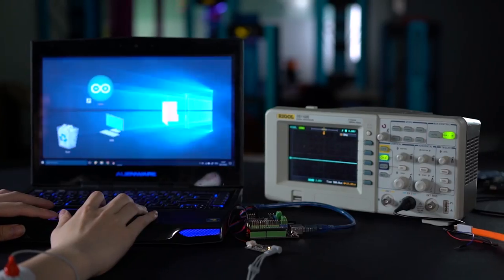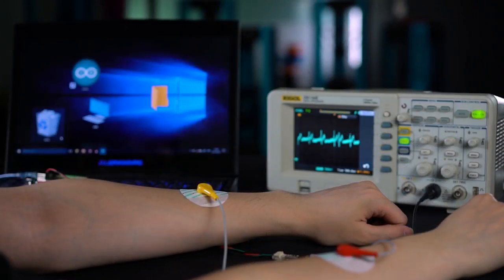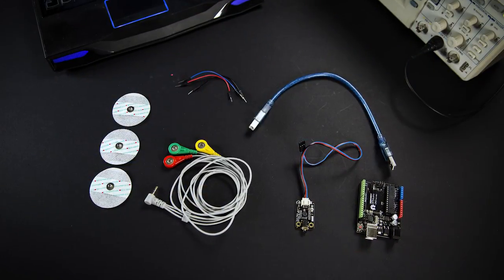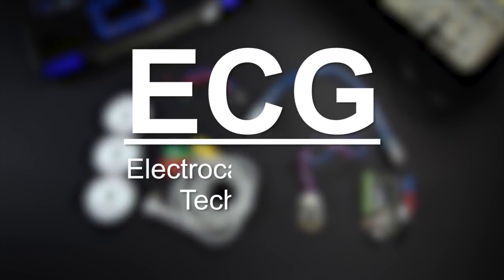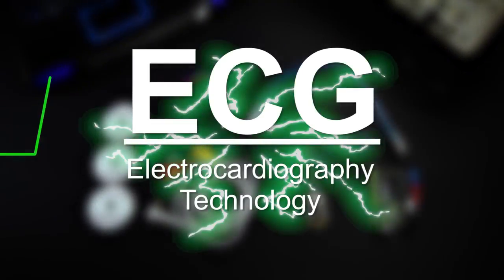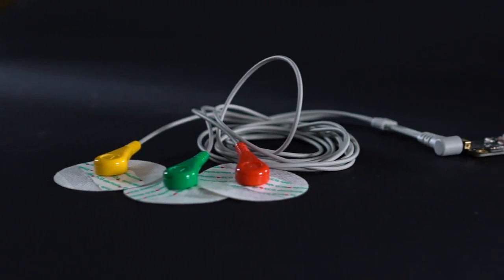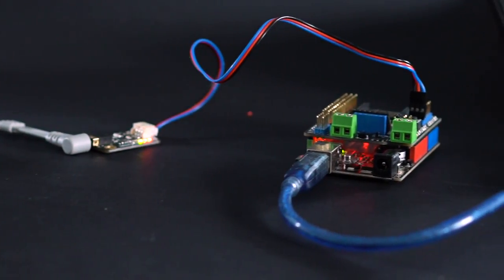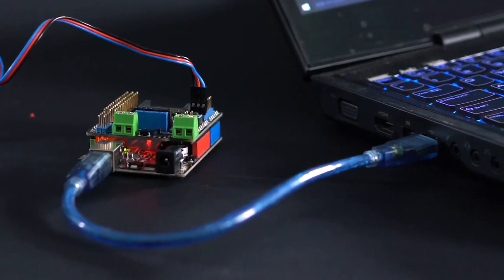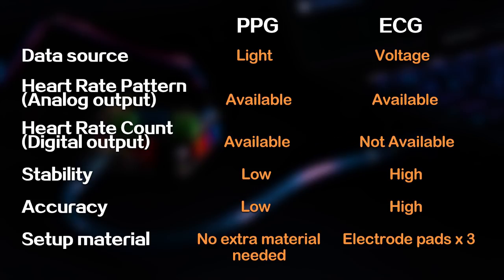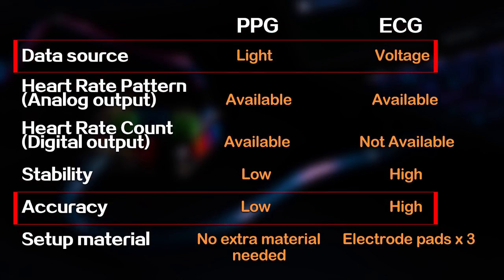Apart from PPG, there is another measuring technology that is more trusted and accurate: ECG (electrocardiography), which measures the electric pulse generated by cardiac movement. Here is another video explaining the ECG heart sensor, which is available here. The following comparison gives us an idea of pros and cons. In general, PPG is good in terms of lightness and simplicity, while ECG is more accurate.